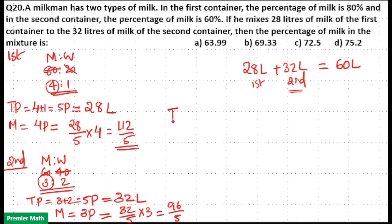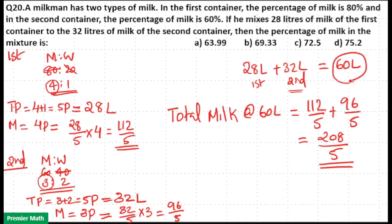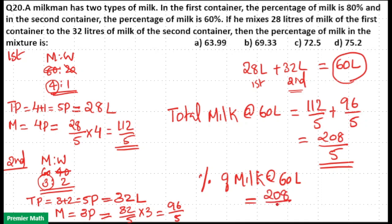Total milk in the 60-liter solution equals 112/5 plus 96/5, which is 208/5. So the percentage of milk in the 60-liter solution is (208/5) divided by 60, multiplied by 100.